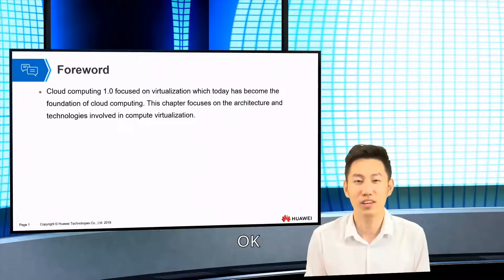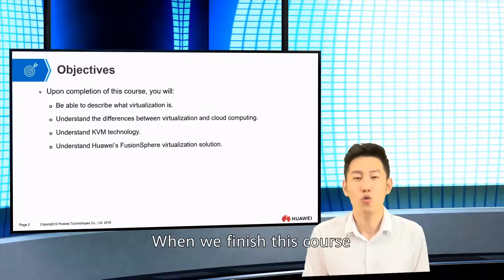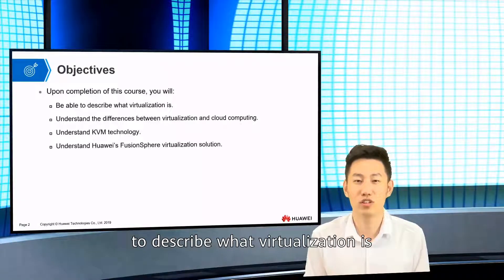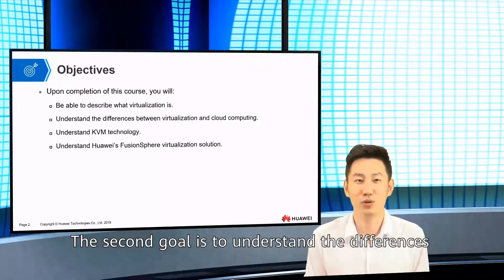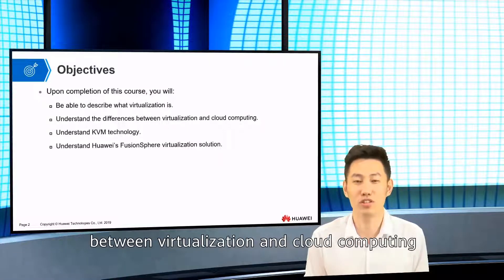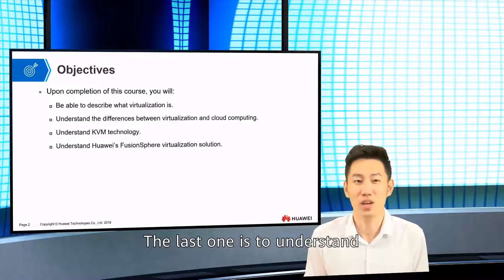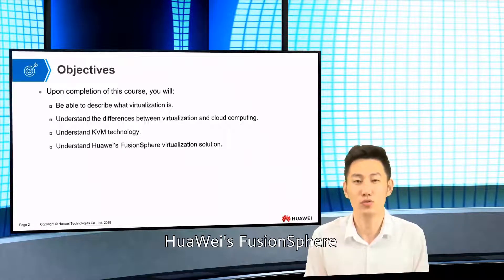Here, let's see the goals of this chapter. When we finish this course, the first goal is to be able to describe what virtualization is. The second goal is to understand the difference between virtualization and cloud computing. The third goal is to understand the KVM technology, and the last one is to understand Huawei's FusionSphere virtualization solution.